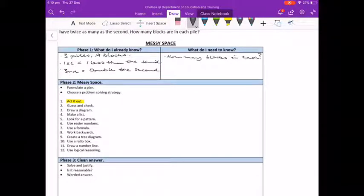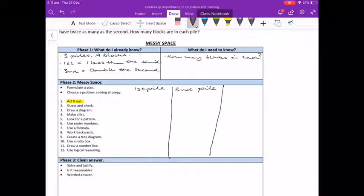So I've got 14 blocks in three piles, and the first one has to have one less than the third. Let's go through and write the piles: our first pile, our second pile, and our third pile.